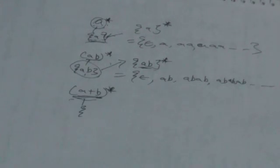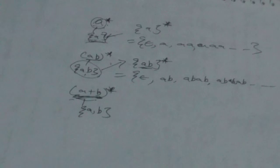Next is (a+b)*. First, the regular set corresponding to a+b contains two elements: a and b. Then (a+b)* represents the Kleene closure of this set, which will contain the empty string and all strings which can be formed from a and b — that is a, b, aa, bb, ab, ba, abb, all combinations of a and b. So it will also be an infinite set.